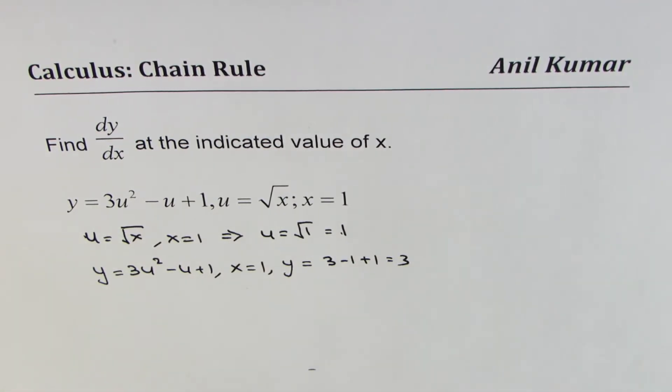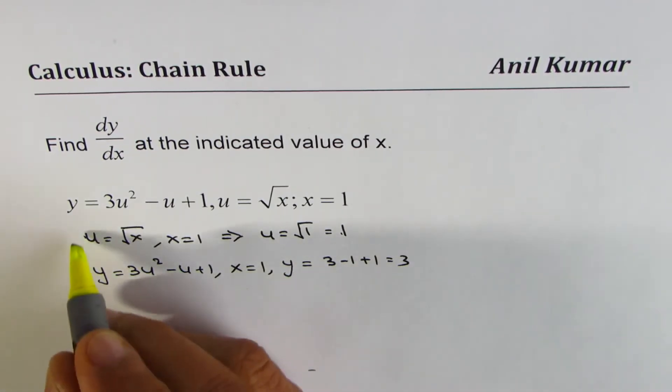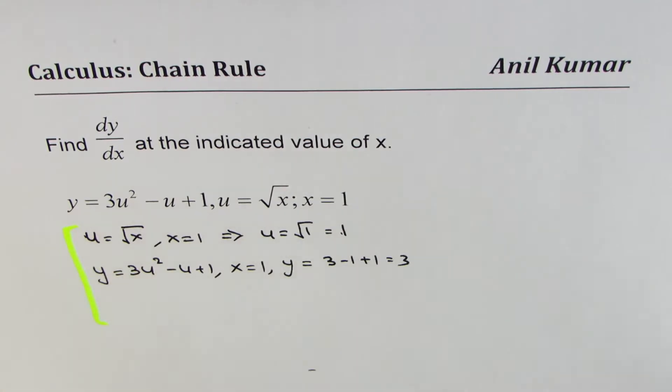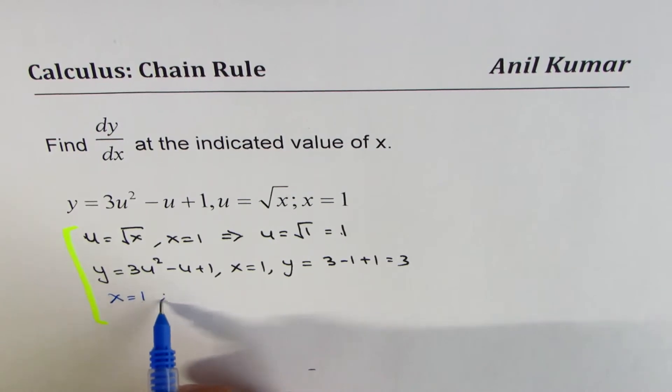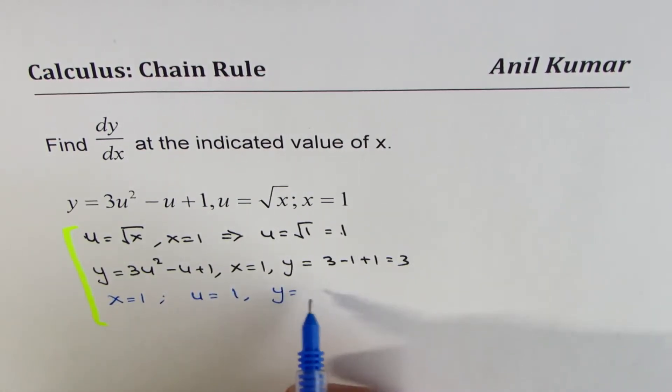So initial conditions given to us are that when x equals 1, let's rewrite. When x equals 1, u equals 1 and y equals 3. We may use these values.